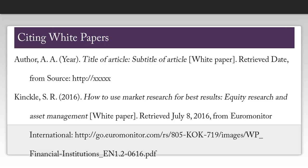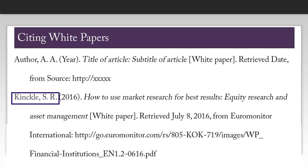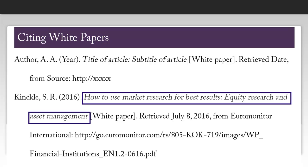After finding all the information I need, I can create my citation. When using APA style, you only include the author's initials after you've typed out their last name. If there is more than one author, list them in the order they appear on the article and put an ampersand before the final author's name. Also make note of the fact that I only capitalized the first word of the title and the first word of the subtitle.